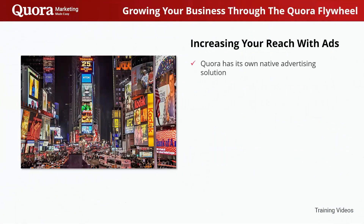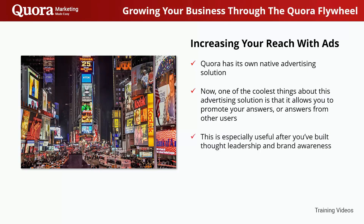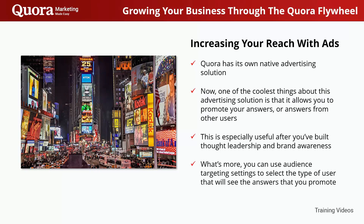Increasing your reach with ads. Quora has its own native advertising solution, which allows people to enjoy the site without having their experience interrupted by ads from external platforms. One of the coolest things about this advertising solution is that it allows you to promote your answers, or answers from other users, providing great flexibility when it comes to increasing your reach — not only by promoting your own content, but also by leveraging social proof. For example, you can search for mentions of your brand in Quora, such as people reviewing your products or citing your content in answers, and then boost these answers with an ads campaign. You can use audience targeting settings to select the type of user that will see the answers you promote, which will help you actually reach the type of user that is most likely to consume your content and buy your products.